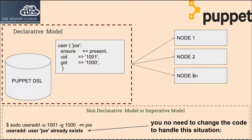As I mentioned, for a configuration state to be achieved no matter the conditions, the configuration language must avoid describing the actions required to reach the desired state. Instead, the configuration language should describe the desired state itself, and leave the actions up to the interpreter. Language that declares the final state is called declarative.